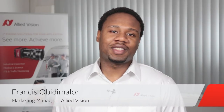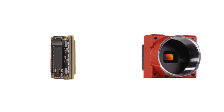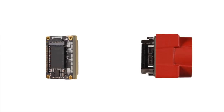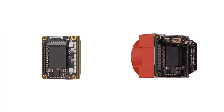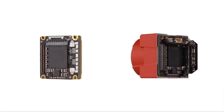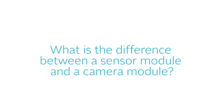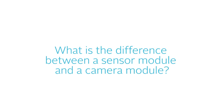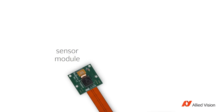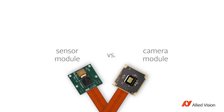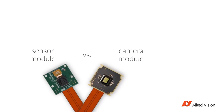Hi everybody, this is Francis Obenemahler and you are watching Allied Vision Answers. After Allied Vision introduced the revolutionary One product line for embedded vision, many people asked us the same question: what's the difference between a sensor module and a camera module? Let's answer this question right now.